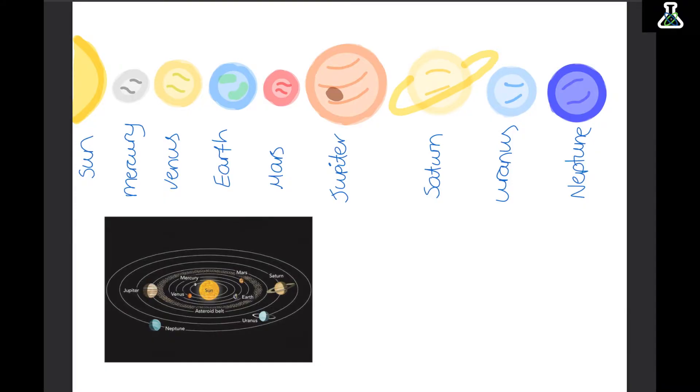So Mercury, which is really close to the Sun, is going to be really hot. But Neptune, which is really far away from the Sun, will be much colder.